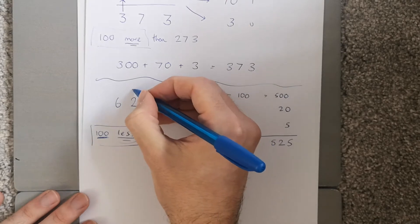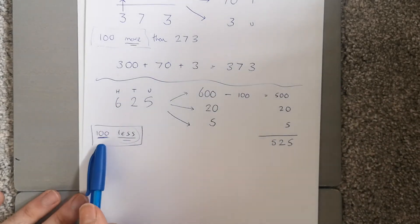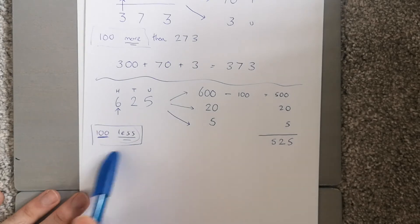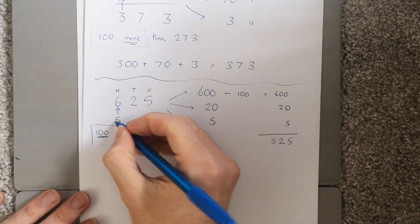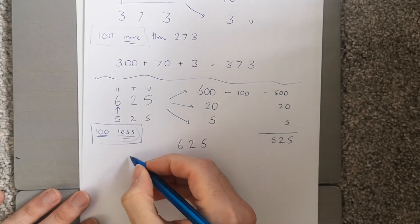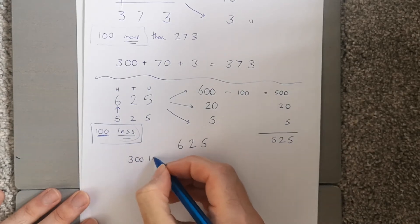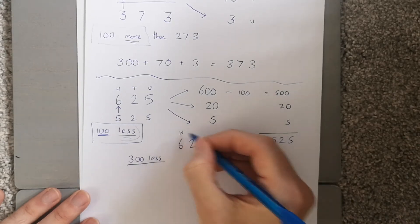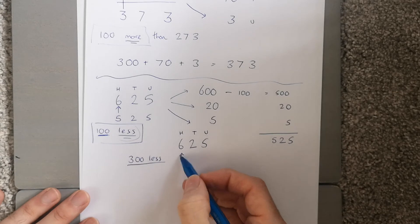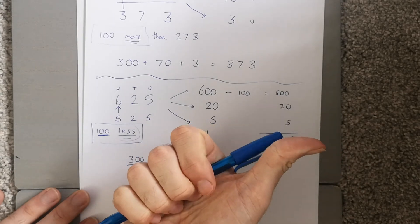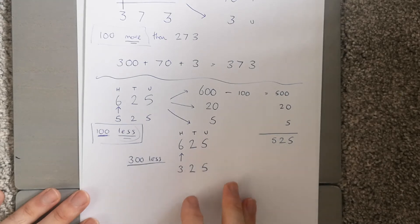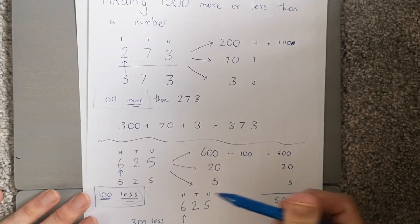There's an easier way. If we know we've got units, tens, and hundreds, and I've got 100 less, I'm looking at the hundreds column. I draw a little arrow there, and because I'm going 100 less I'm going one down — so 6 becomes 5. The rest all stays the same. Now if I had 625 and wanted 300 less, same idea — I look at the hundreds, and take it down three: 600, 500, 400, 300. That's 300 less, giving me 325, and everything else stays the same.